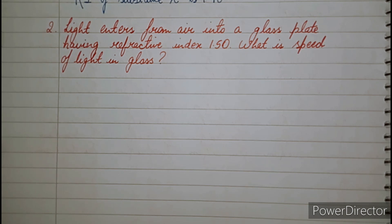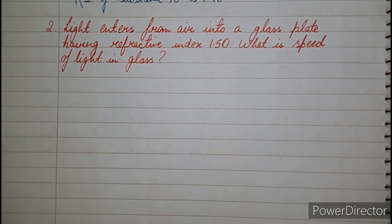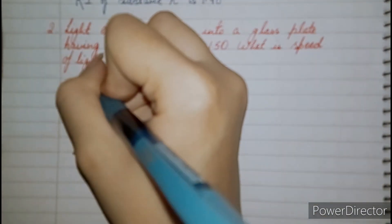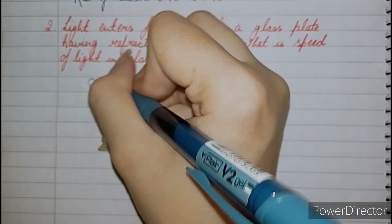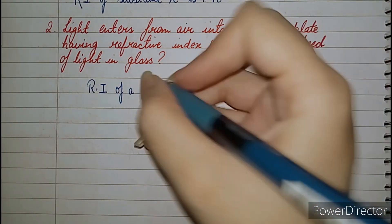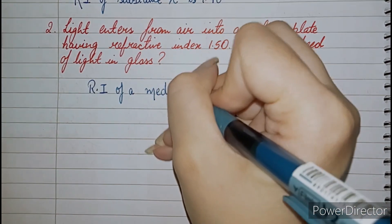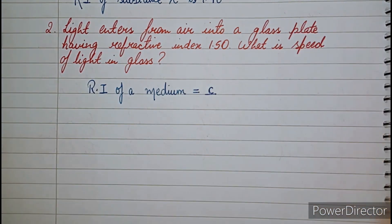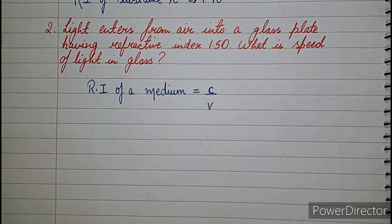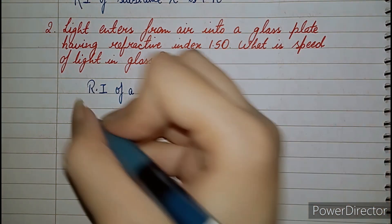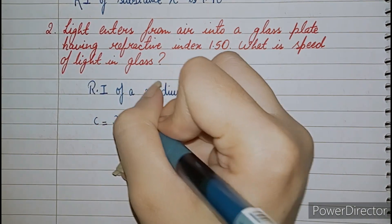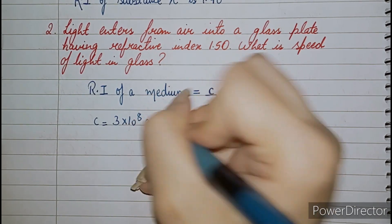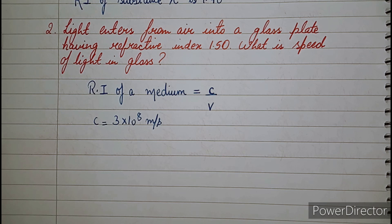The next question says light enters from air into a glass plate having refractive index 1.50. What is the speed of light in glass? The formula of refractive index of a medium is: speed of light in vacuum — that is 3×10⁸ — upon speed of light in medium V. The speed of light in vacuum or air is 3×10⁸ meters per second; it is fixed and you need to learn it.